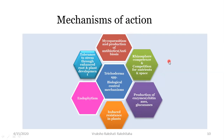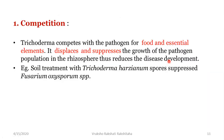The first mechanism of action is competition. Trichoderma competes with the pathogen for food and essential elements. It displaces and suppresses the growth of the pathogen population in the rhizosphere, thus reducing disease development. For example, when soil treatment with Trichoderma harzianum spores was done, it was found to suppress the pathogen Fusarium oxysporum.